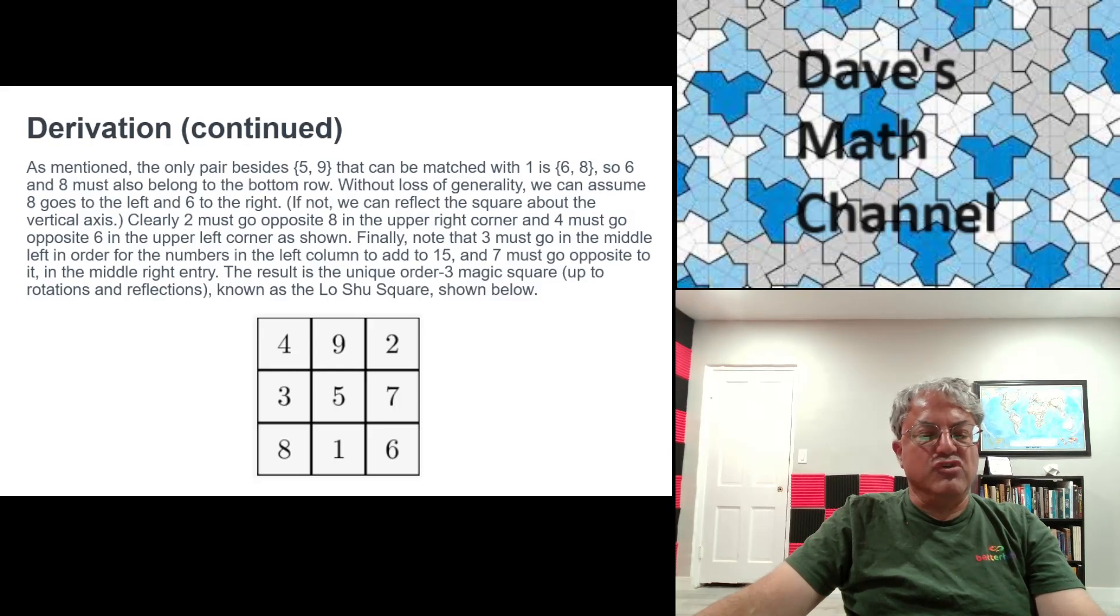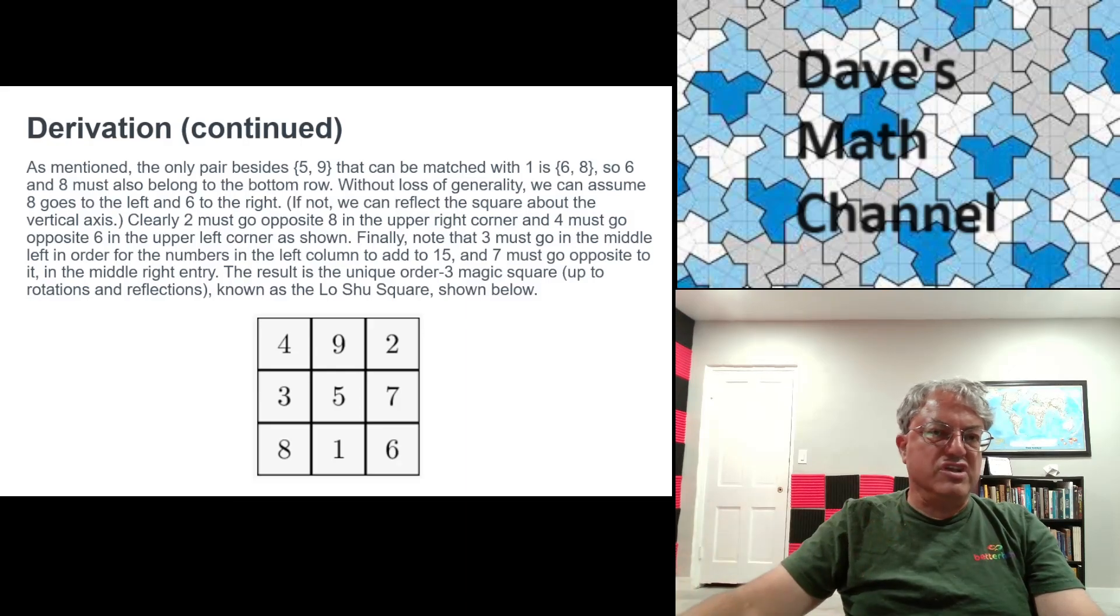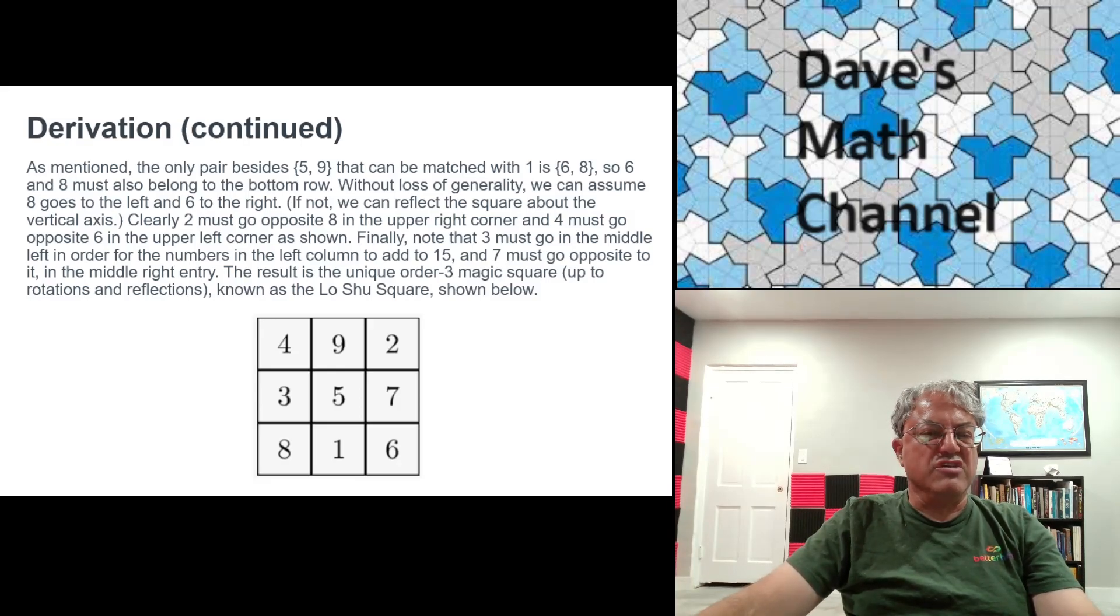And before I say any more, maybe I should say a little bit about higher order magic squares. What's interesting to me is that the Lo Shu, the 3 by 3, is unique. There's no 2 by 2. That's interesting. There's no order 2 magic square. I mean, one would be trivial. I guess there is no order 1 magic square, maybe. The square with just the number 1 in it, but nobody cares about that. There's no 2 by 2.